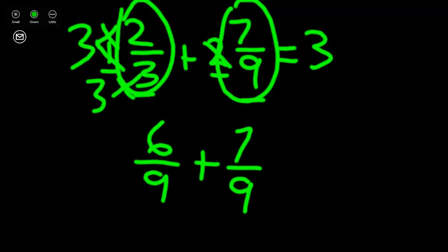Now that we have two fractions with common denominators, we can easily look at our numerators only and add them together to get our new fraction or our sum for 6 ninths and 7 ninths. 6 plus 7 is 13 and our denominator stays the same.